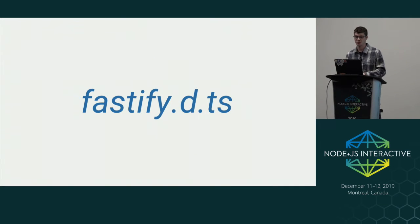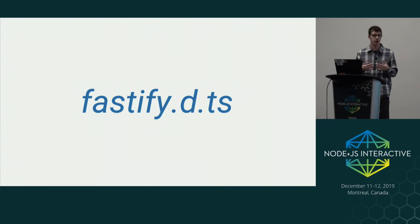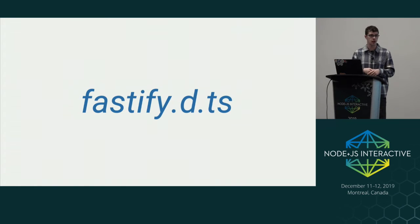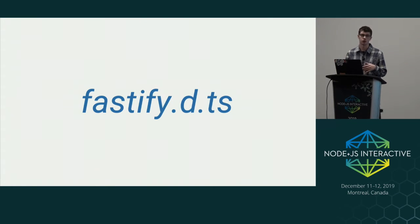The Fastify definition file — who here has ever written one by hand before? Normally this file is exported when you run the TypeScript compiler. But when you're writing JavaScript code, you don't get that luxury, so you have to write it yourself. In a recent TypeScript update they added the ability to export type definitions from JSDoc, but that happened quite recently. TypeScript is working hard to provide type support even if your code is in JavaScript.